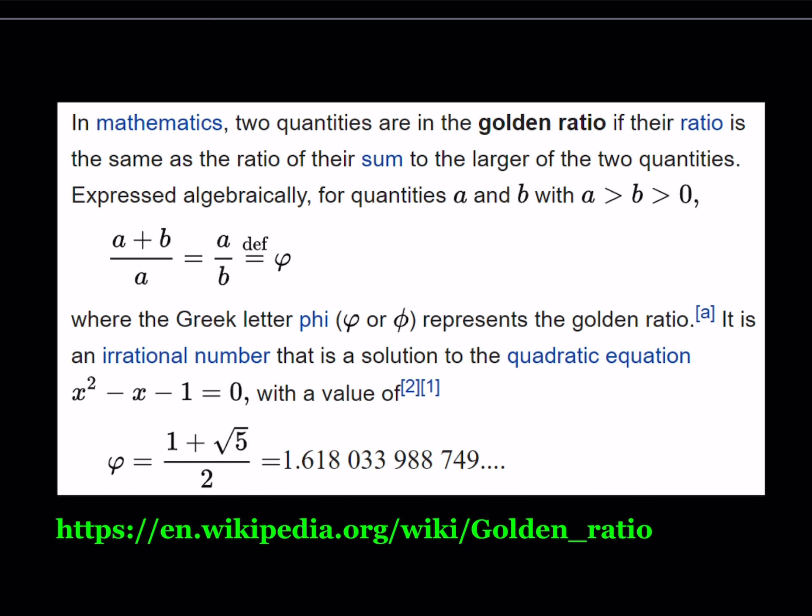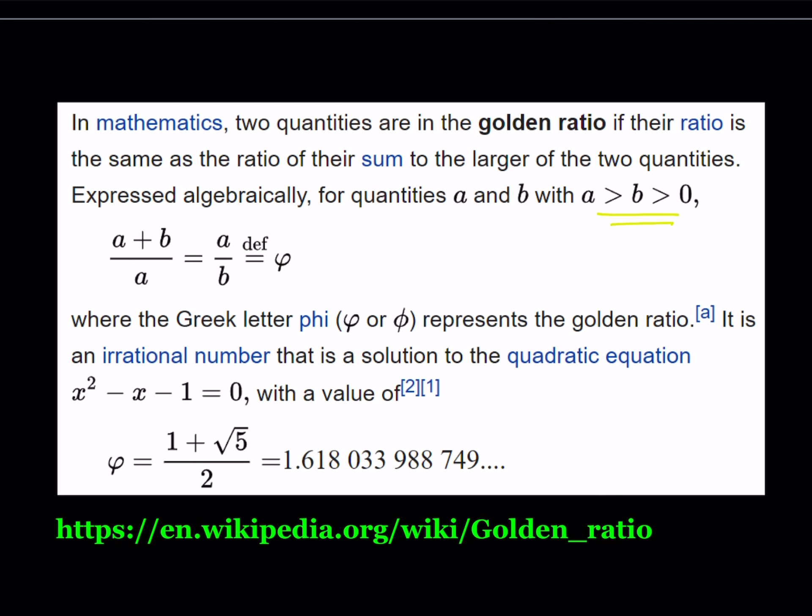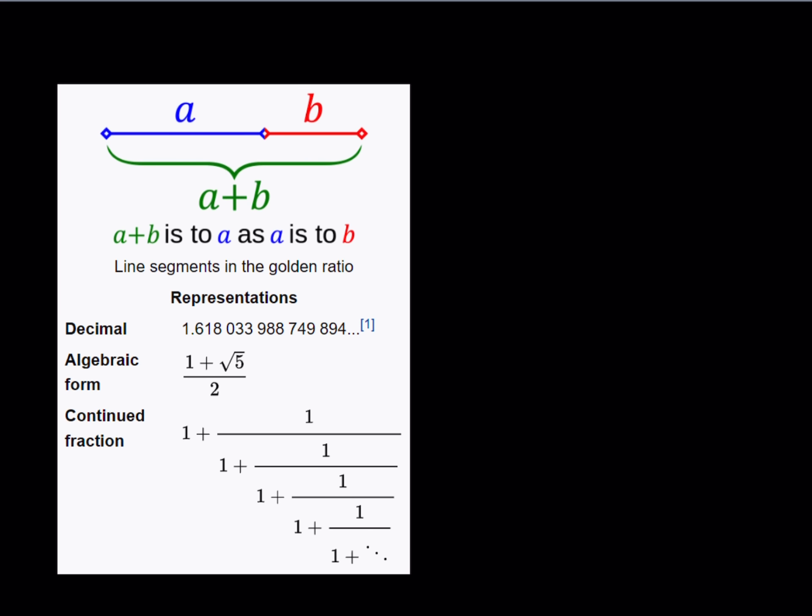In math, we call two quantities in the golden ratio if the ratio is the same as the ratio of their sum to the larger of the quantity. There's a much easier way to take a look at it, algebraically. So if you look at the symbols, we're kind of talking about a and b, and they satisfy this equation. And this is actually better explained in the next slide. So in the next slide, actually, we're going to talk about more details. But anyways, it is equivalent to, the golden ratio is equivalent to 1 plus root 5 over 2. And it comes from the quadratic equation, x squared minus x minus 1 is equal to 0. So this is kind of like a better explanation, more visual.